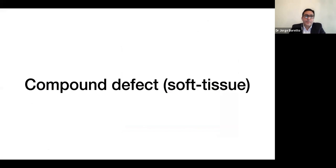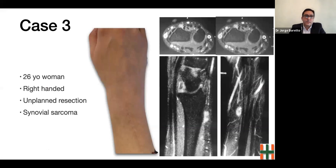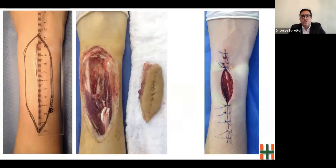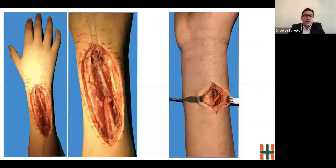Now I will present two more cases of soft tissue defects that include functional deficits due to tumor resection. The first case is a 26-year-old right-handed woman who underwent an unplanned resection of a tumor located in the distal third of her dominant forearm. The histological diagnosis was synovial sarcoma and she was referred to our hospital. A wide resection was planned and performed by the oncological team, including the dorsal cortex of the distal radius, the extensor digitorum communis, extensor pollicis longus, extensor indicis proprius, and the scar of the previous surgery. The soft tissue reconstruction was again delayed.